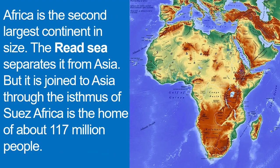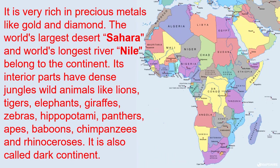Africa is the second largest continent in size. The Red Sea separates it from Asia, but it is joined to Asia through the Isthmus of Suez. Africa is home to about 117 million people. It is very rich in precious materials like gold and diamond.